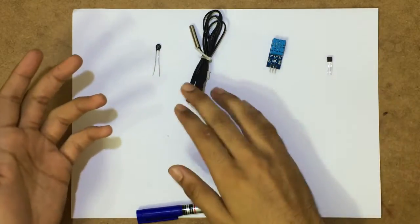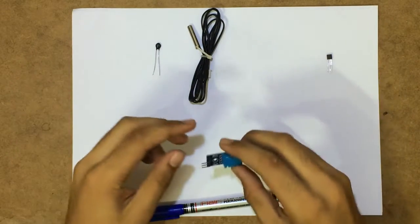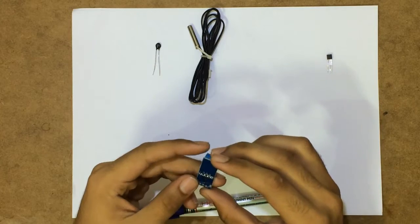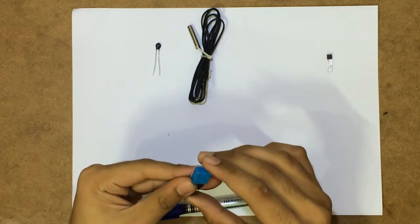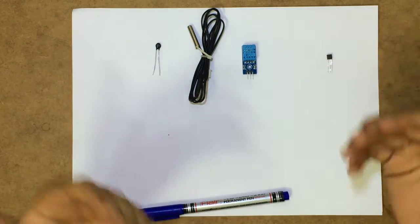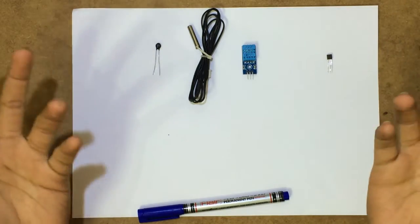Now we have the DHT11 temperature sensor. The best part about this sensor is that it also gives the humidity readings. And it is mainly used in weather stations, not for circuit board friendly temperatures.